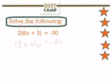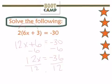I need to undo the addition of 6, so I'm going to subtract 6 from both sides. So I have 12x equals negative 36. Divide both sides by 12, I have x equals negative 3.